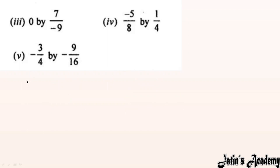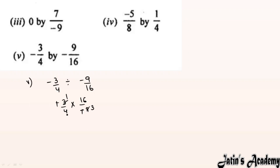Fifth part: minus 3/4 ÷ (minus 9/16). Keep minus 3/4 as such, divide converts to multiply, take reciprocal: 16/minus 9. Minus and minus cancel. Cancel: 3 and 9, 4 and 16. Answer: (4×1)/(3×1) = 4/3.